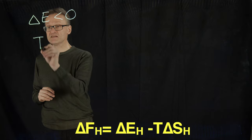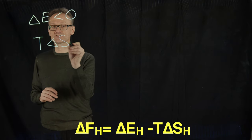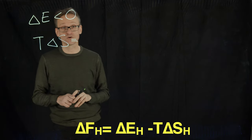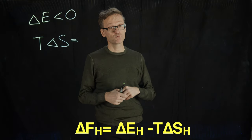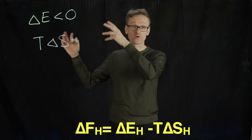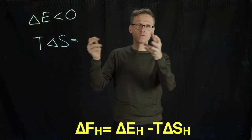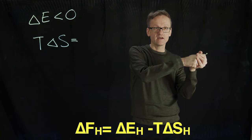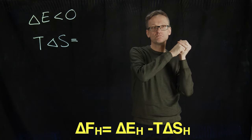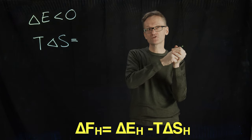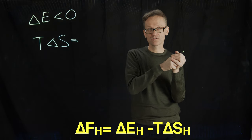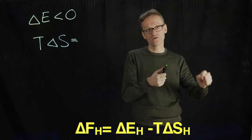So the T delta S term when we are forming a hydrogen bond—as I already mentioned, we're going from a state where both molecules are completely free and then we are restricting them more. And if they're becoming more restricted, that is a more ordered system. And if the system is more ordered, that is a system that has lower entropy.